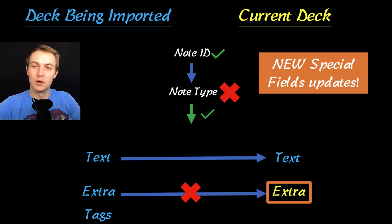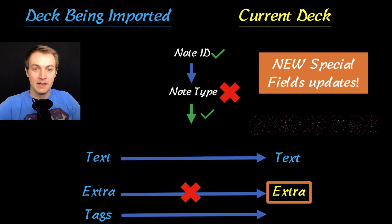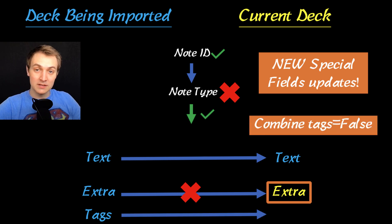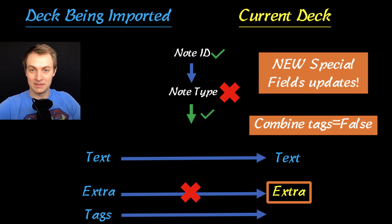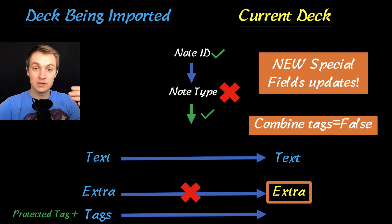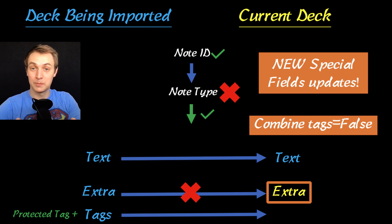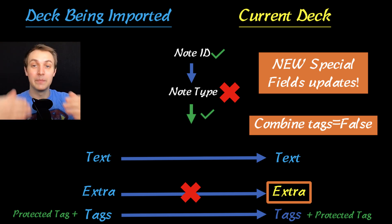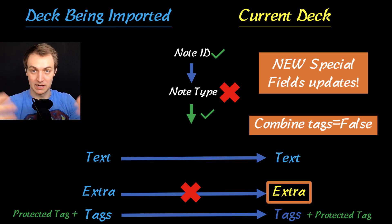I'm going to show you a little more on Anki in a second. If we set combined tags to false — this is also a new feature — because we were changing note types around, which was going to make things really difficult, we added a setting where you can choose a protected tag. You can select a term to protect, and that way you can still set combined tags to false, overwrite the tags, but keep the tag that you want to protect. You can actually protect a couple of them.